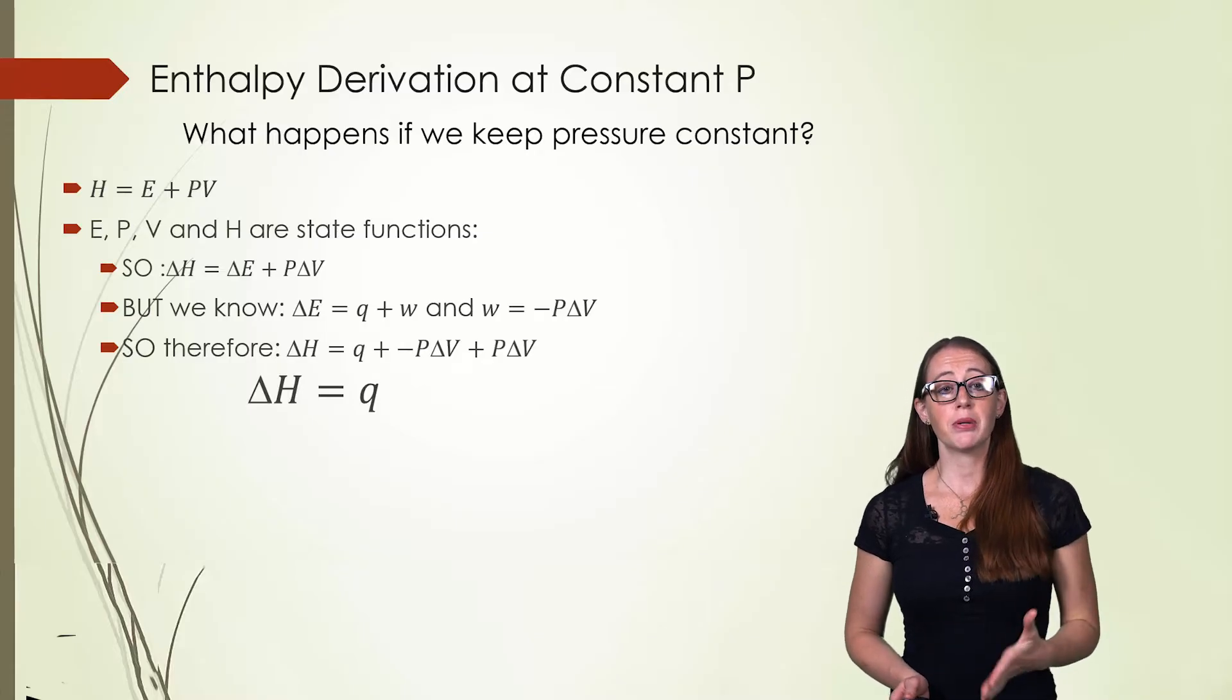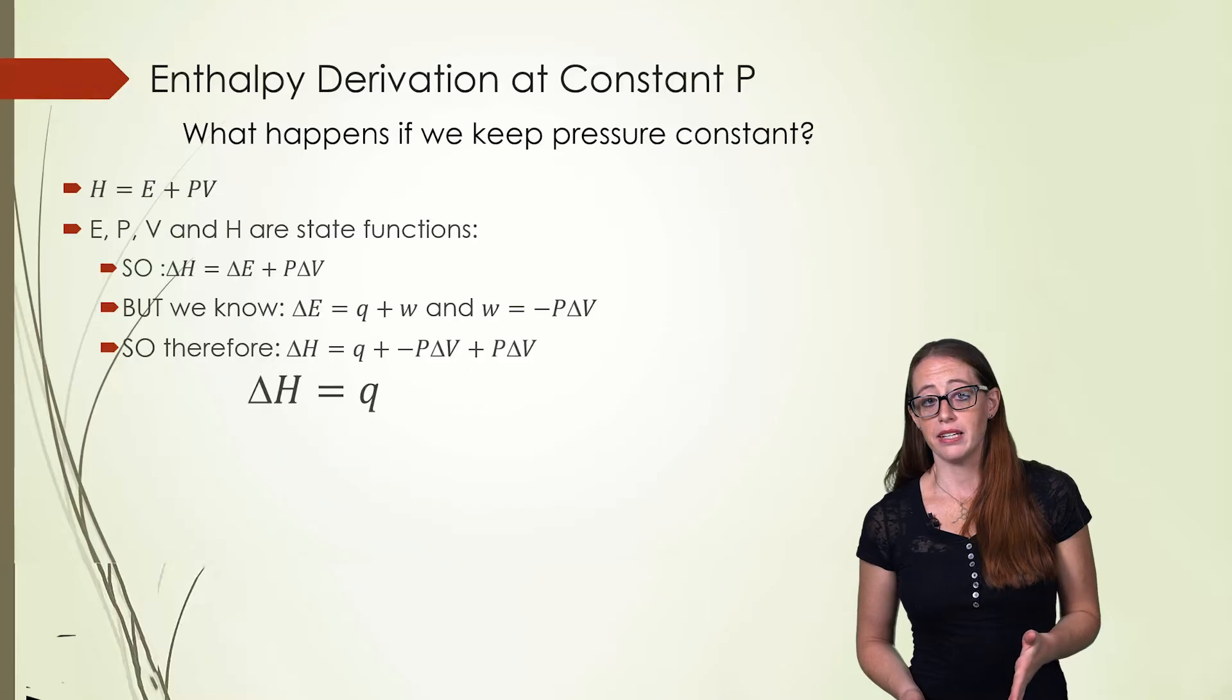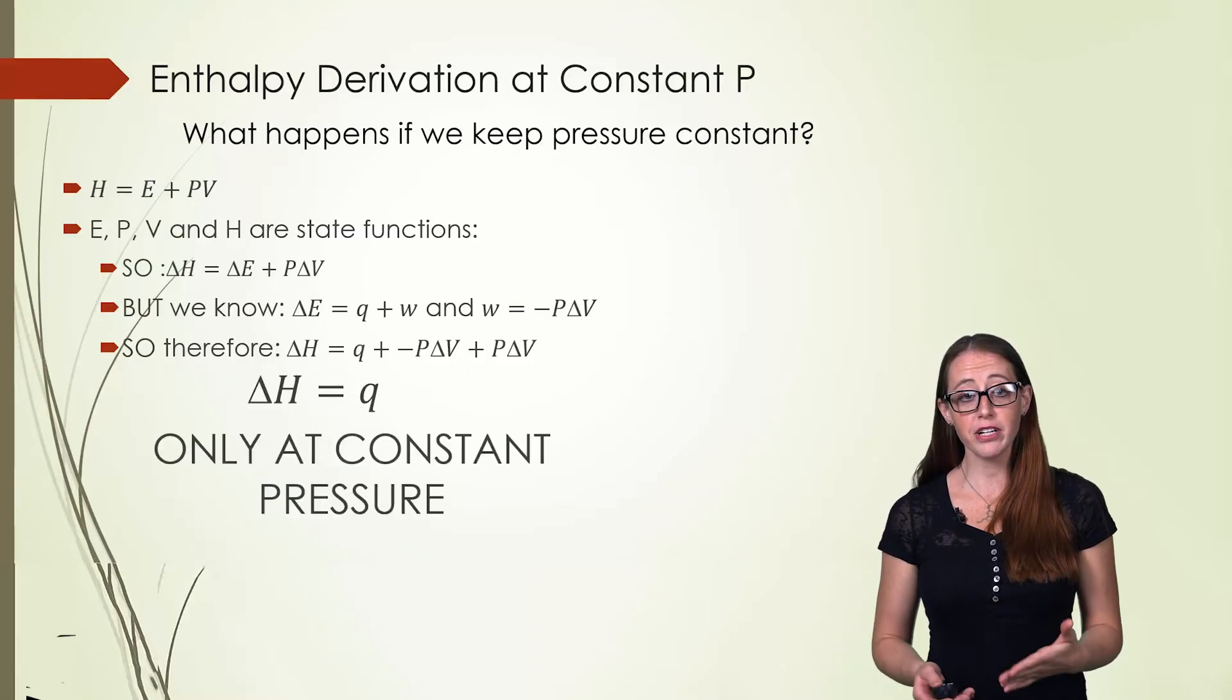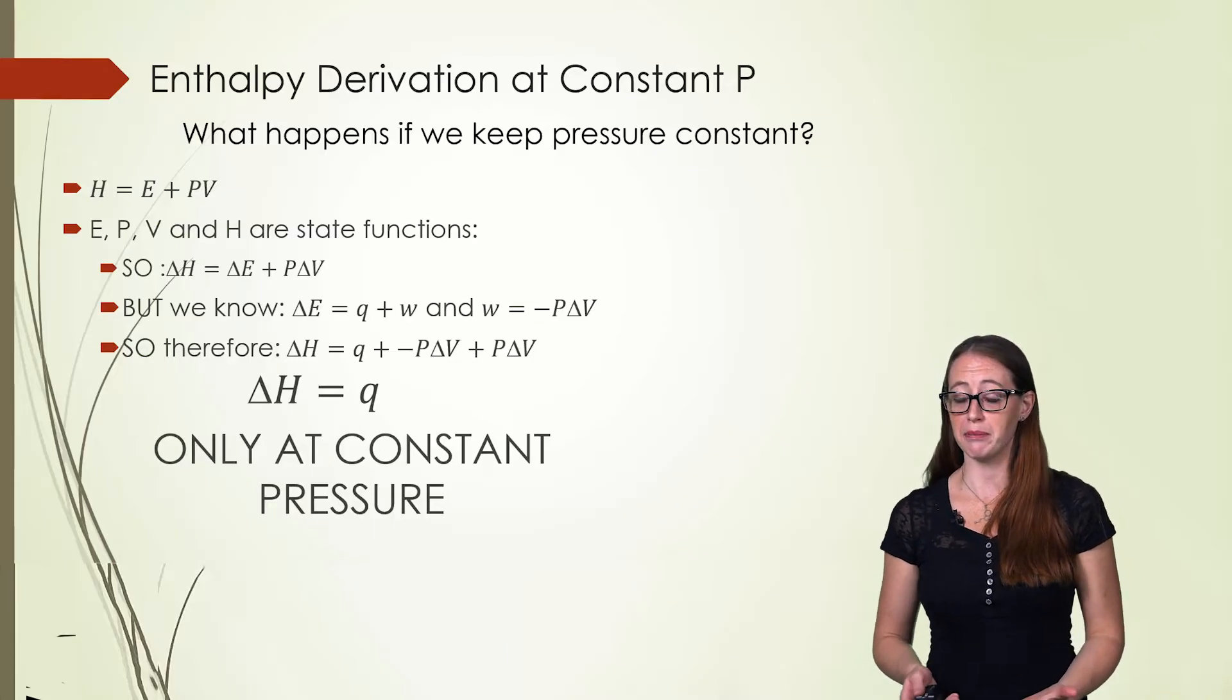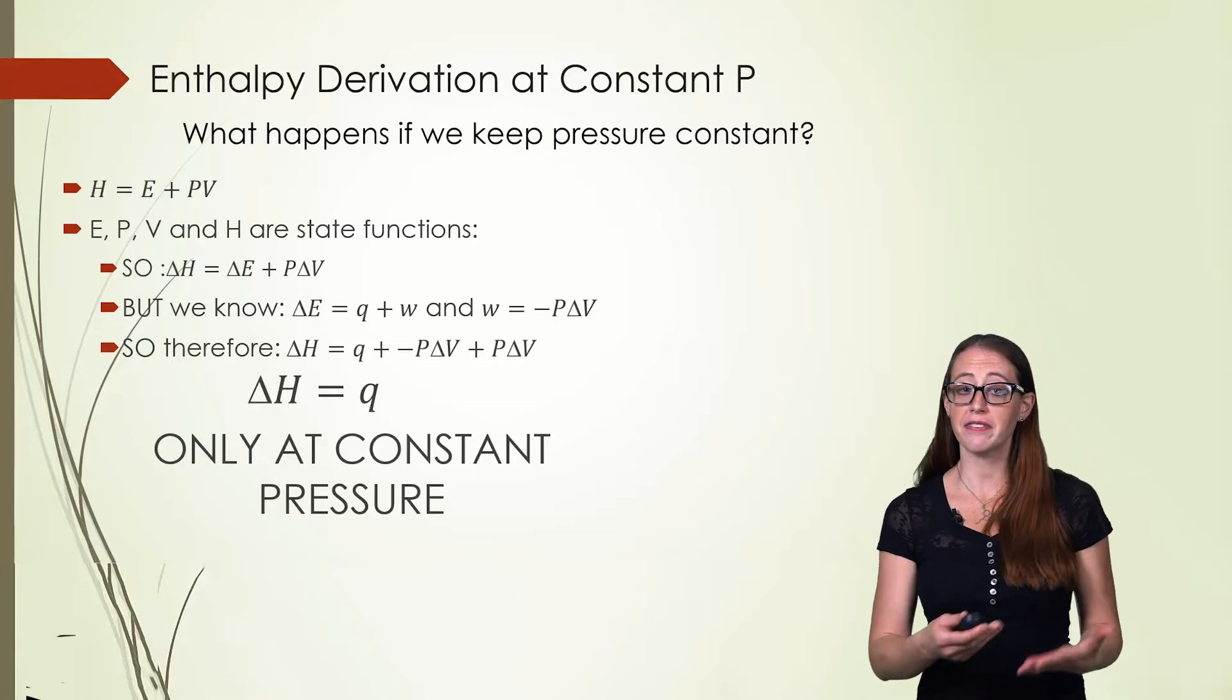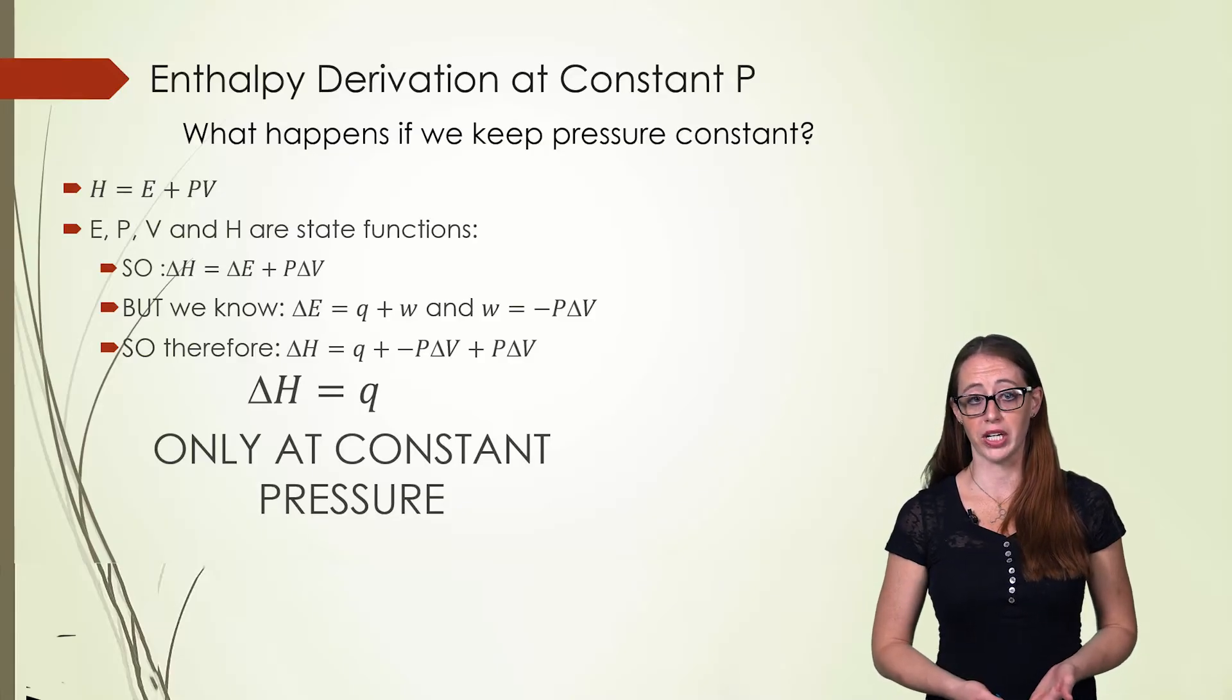Now it's very important to recognize that we did something here. If you look at P, that is not changing in this system. Therefore, this is only true at constant pressure. You cannot use this in the earlier work that we did on bomb calorimetry because that is not at a constant pressure. And the derivation that I have shown you here is assumed at a constant pressure based on our definition of work.